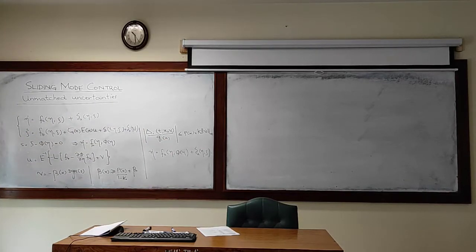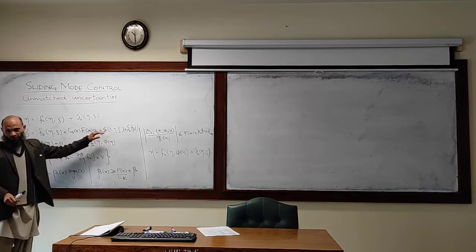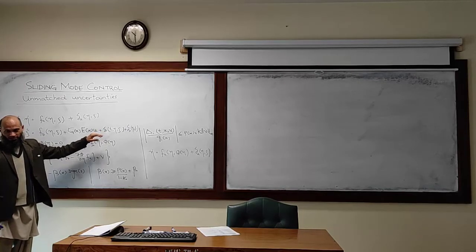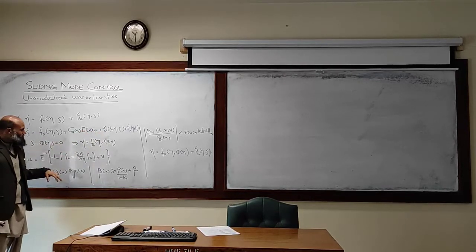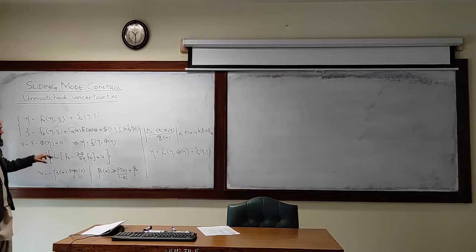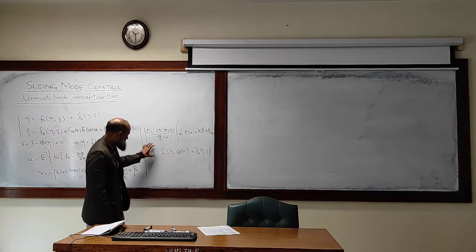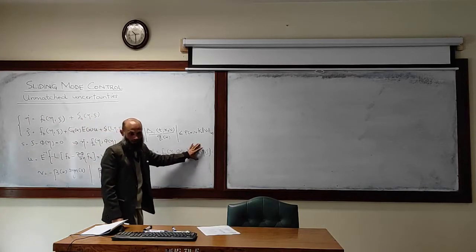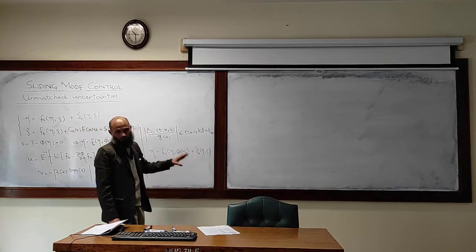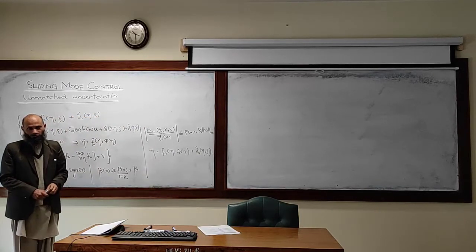The conclusion is: sliding mode control can handle matched uncertainties. For unmatched uncertainties, it may or may not handle the situation. If phi of eta is selected such that the equilibrium point of this uncertain system is asymptotically stable, then sliding mode control will work; otherwise, it will not.